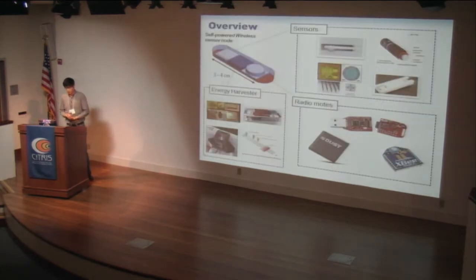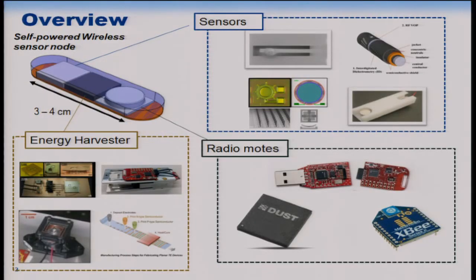Let me start with a schematic of a self-powered wireless sensor node. For a typical self-powered wireless sensor node, you will have three main components: sensors to take measurements, radio modes to transmit the measurements, and an energy harvester to provide continuous power. In our lab, we have developed sensors for underground cables, sensors for gas pipelines, and sensors for measuring electric current in residential or commercial areas.